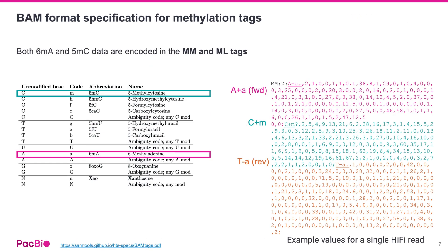The 5mC and 6mA calls are stored in the MM and ML BAM tags of your HiFi reads BAM file. 6mA is annotated with the A+A notation as shown in the example in magenta and orange, and 5mC is annotated with the C+M? notation as shown in the example in teal.